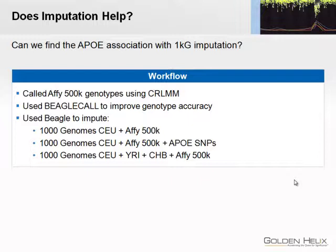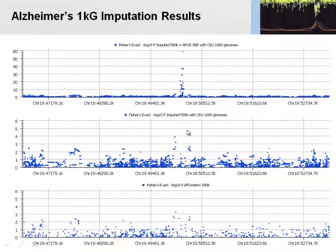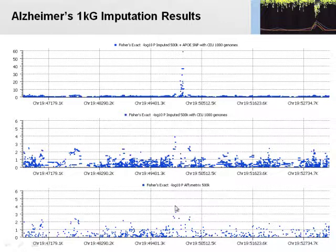We also looked at all three CEPH populations — 180 individuals — including Yoruban, Chinese, and Japanese populations as well as CEPH. At the bottom plot you see the 500K without the APOE SNPs. The APOE associations are not near this peak — it's somewhere between 10 to the minus 3rd and 4th. You don't see any appreciable increase in significance with imputing the CEPH 1000 Genomes population. If you include APOE, of course, you have the signal, and you get this nice broad peak of all the SNPs that are in LD with APOE.